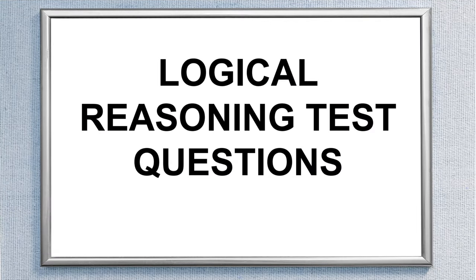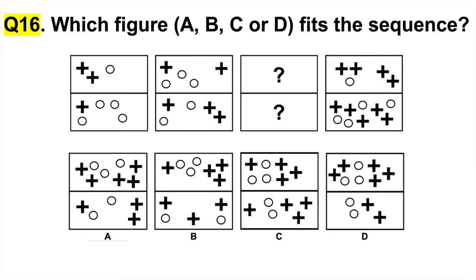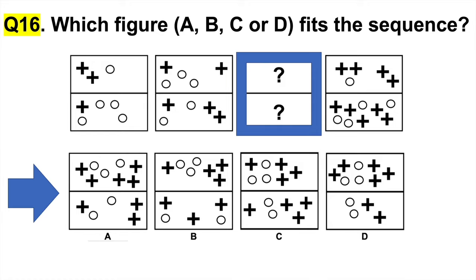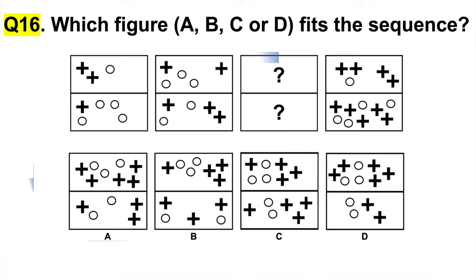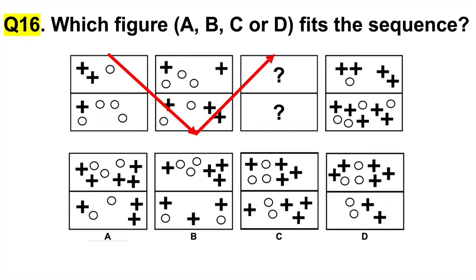Let's now move on to logical reasoning test questions — these are difficult, but they come up all the time during psychometric tests. Sometimes you will find a pattern starting from the left moving to the right across the top, then across the bottom, or the sequence might go diagonally. You need to look for patterns in different ways — this is a really good thing to consider when taking the real psychometric test.